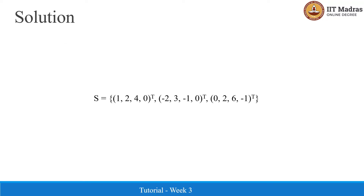Let the first vector be u, the second be v, and the third be w. Let us first check whether u and v are orthogonal to each other by computing the dot product. So u dot v is equal to minus 2 plus 6 minus 4, which is equal to 4 minus 4, that is 0. Therefore u and v are orthogonal to each other.